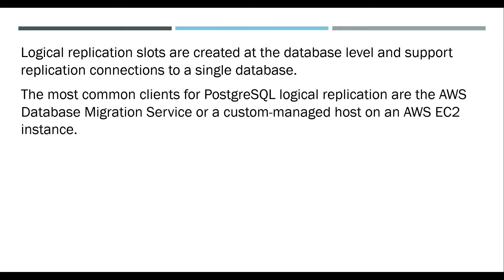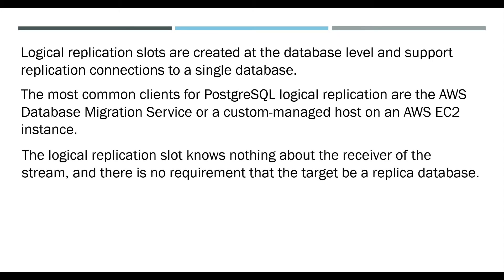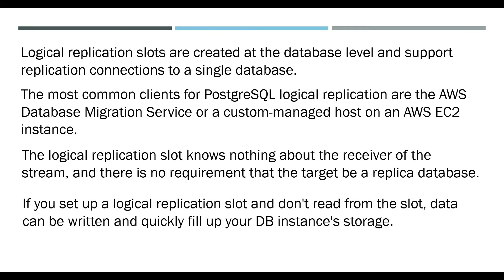Logical replication slots are created at the database level and support replication connections to a single database. The most common clients for PostgreSQL logical replication are the AWS Database Migration Service or a custom managed host on an AWS EC2 instance. The logical replication slot knows nothing about the receiver of the stream, and there is no requirement that the target be a replica database. If you set up a logical replication slot and don't read from the slot, data can be written and quickly fill up your DB instance's storage.